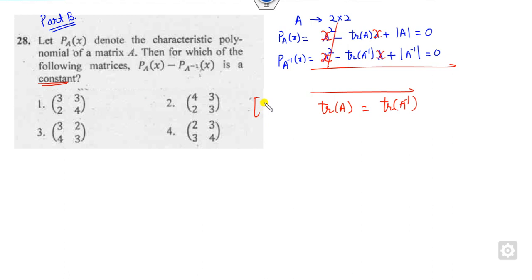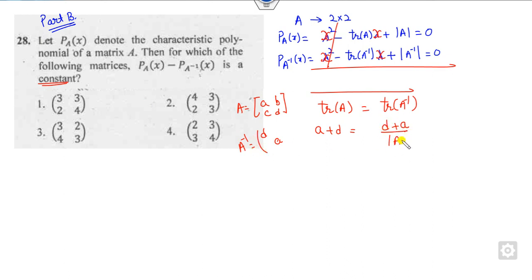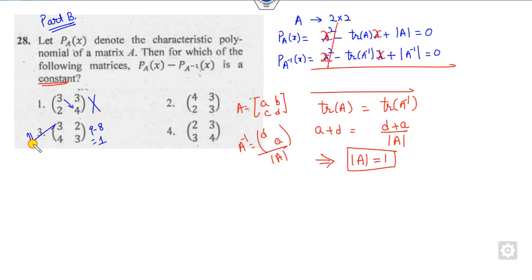What is the trace of A inverse? If A is a 2×2 matrix, A inverse equals the adjoint divided by determinant of A, so trace(A inverse) equals (D + A) over determinant(A). They are equal only when determinant(A) is 1. You can check: 9 minus 8 is 1, so that is the right answer. 12 minus 6 is not 1, and 8 minus 9 is minus 1, so the right answer is option A.